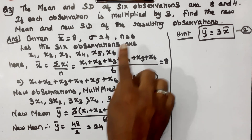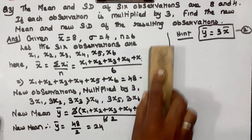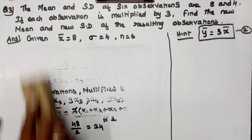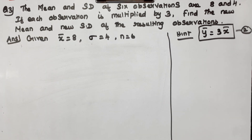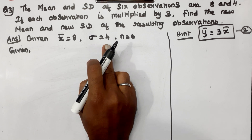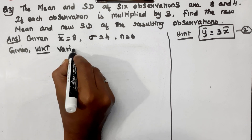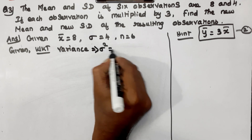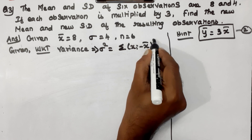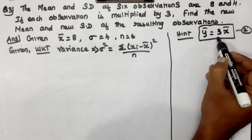Next, we find the variance and new standard deviation. Given standard deviation sigma equals 4, the variance formula is: sigma squared equals summation of (xi minus x-bar) squared, divided by n.